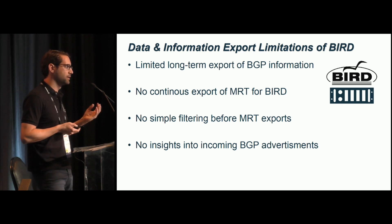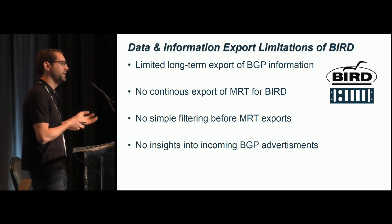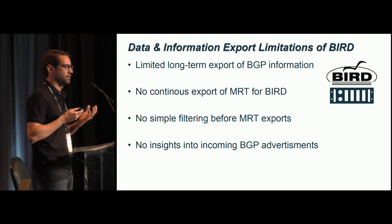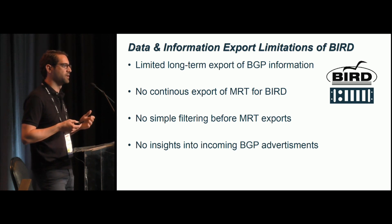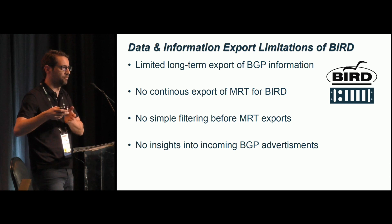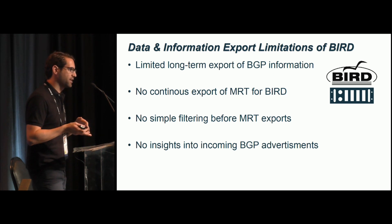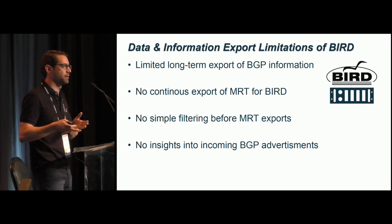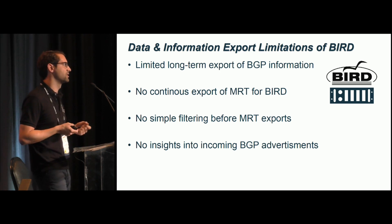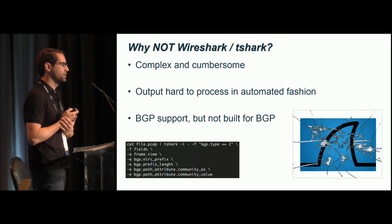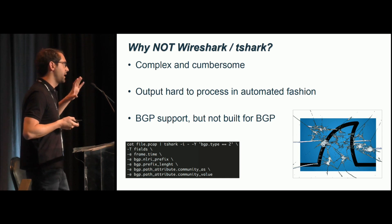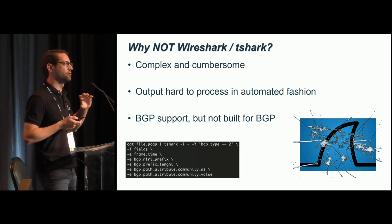There's also no simple filtering before the MRT exports, because sometimes I just want to switch it on on demand for a certain customer IP or similar — that feature doesn't exist in BIRD. Also, there are no insights into incoming BGP advertisements. We can see which prefixes are present, but we cannot see what happened before best path selection, which is very important for debugging.